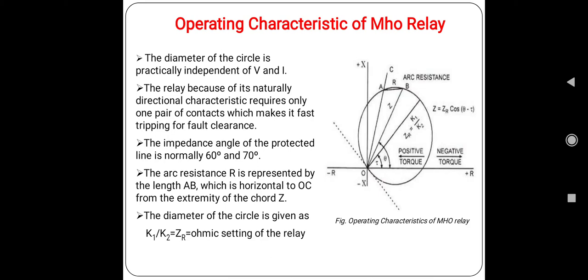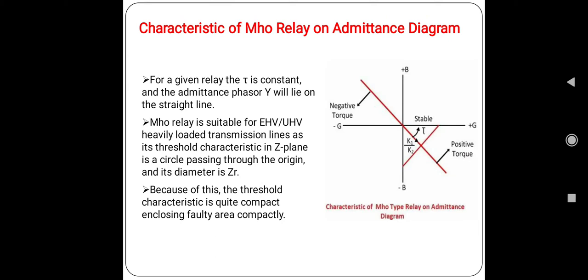For a given relay, the torque τ is constant, and the heads of the admittance phasor Y will lie on the straight line. This is the straight line on the admittance diagram. The characteristics of admittance relay is also shown in the admittance diagram which is shown in the figure.